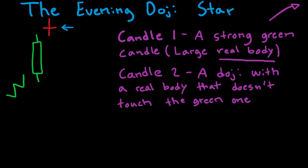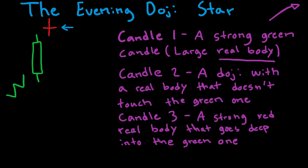Candle three of the Evening Doji Star is a strong red real body, a strong red real body that goes deep into the green one. So it might look something like this, and it might have some shadows. Perhaps it looks something like this. And by going deep into the green one, we preferably want it to end below the 50% mark of the green one. So the 50% mark of the green real body is here. We want the red one to close below this mark.